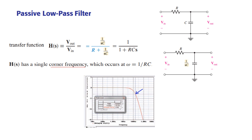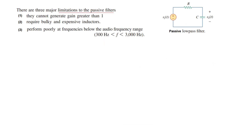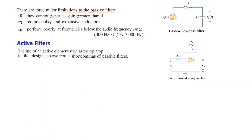There are three major limitations of the passive filter. First, it cannot generate a gain greater than one. Second, it requires bulky and expensive inductors, especially in an RL circuit where a very large inductor is needed. Third, it performs poorly at frequencies below audio frequencies — if the frequency is less than about 300 Hz, performance is very poor. An active filter primarily uses an operational amplifier to generate gain, overcoming the shortcomings of the passive filter. This is one design for the active low-pass filter.